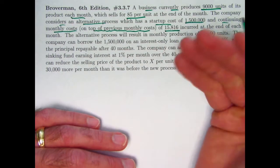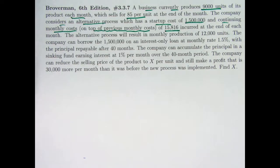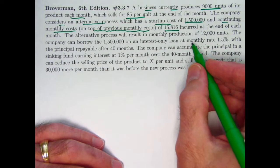The company considers an alternative process that's going to cost some money. It's going to have a startup cost of $1.5 million, and continuing monthly costs that are on top of previous monthly costs of $15,816, incurred at the end of each month. Keep things simple. What are these extra costs? Well, maybe this new production process costs more because you have to hire new workers, or you need bigger space, you need more space in your warehouse or something.